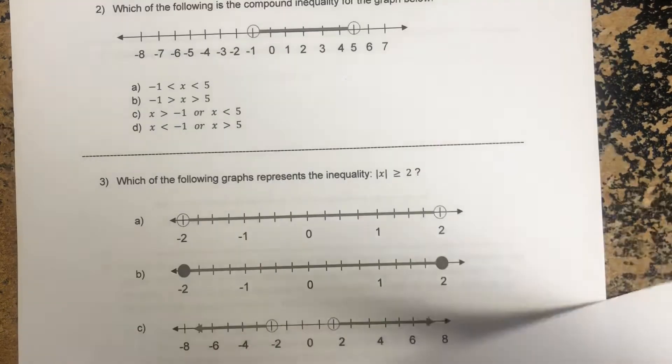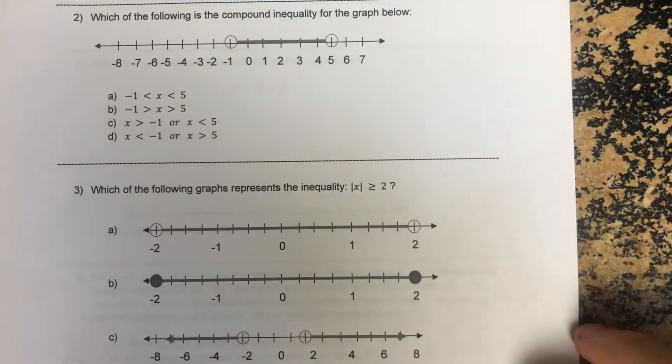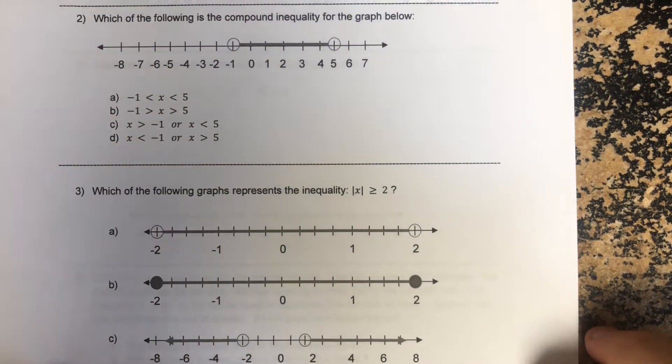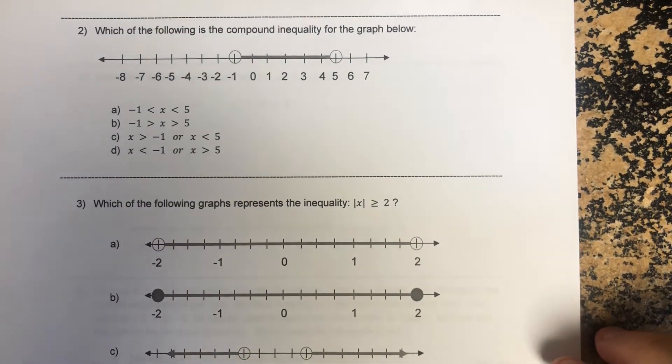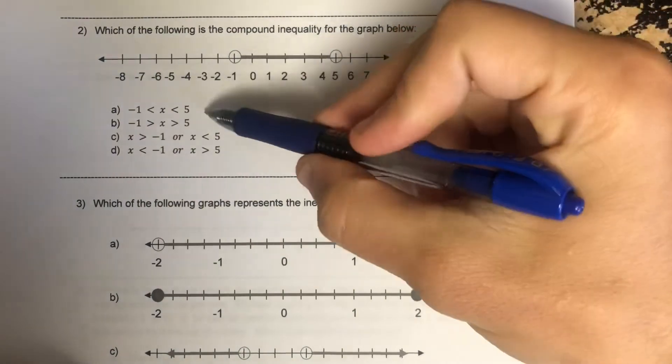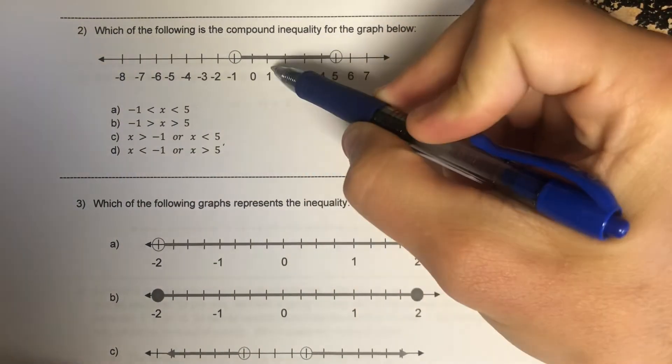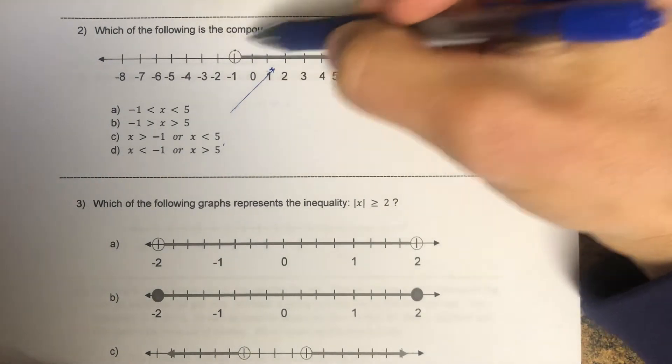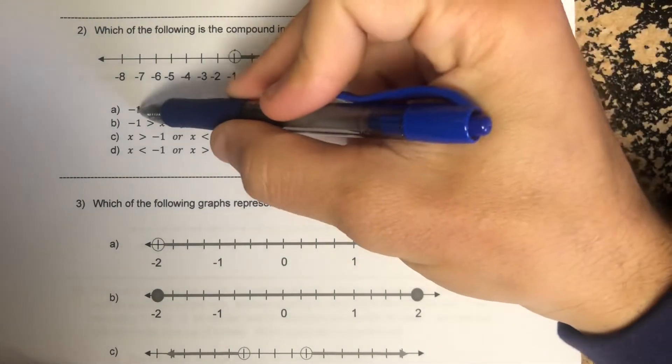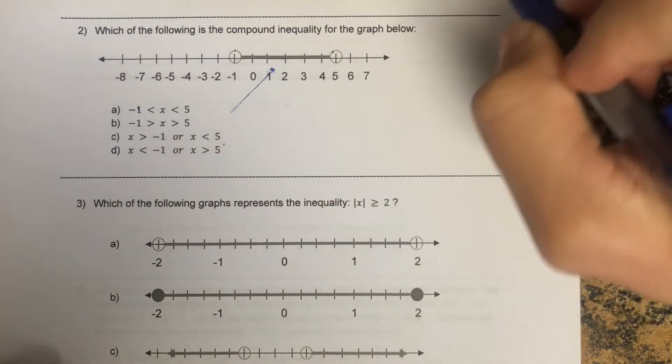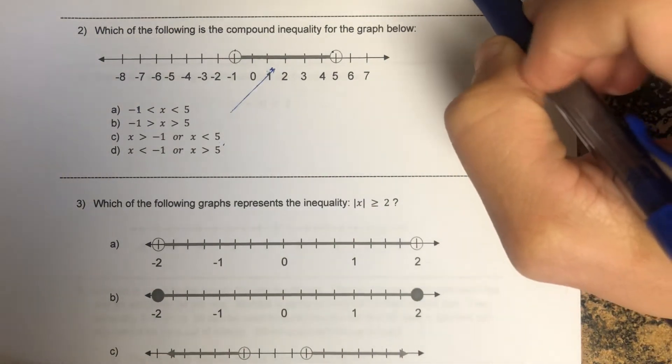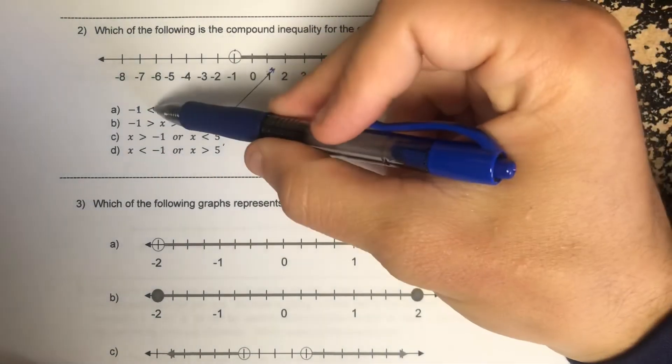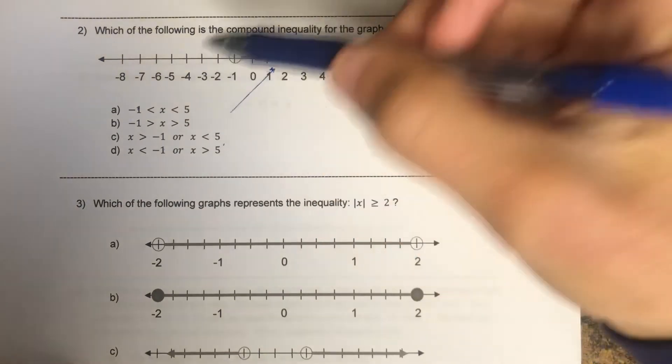Alright, number two. As you can see there, number two says which of the following is, which of these corresponds to that graph? So this has endpoints at negative one and five. Well, unfortunately those are all correct, so those all say negative one and five. They are both open circles, but these are only greater than or less symbols, so I can't eliminate that.